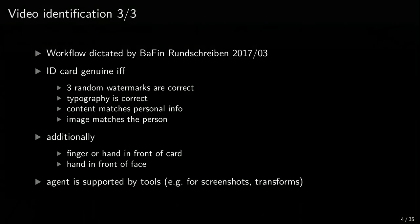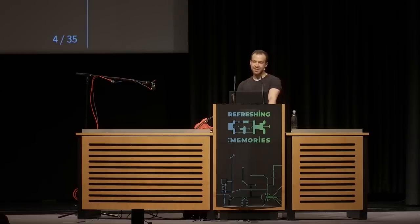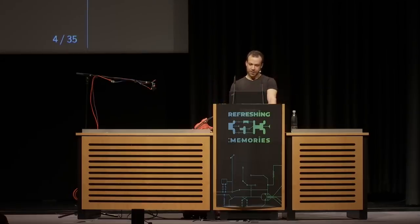Back to the workflow of video identification. The German institution for financial oversight issued a letter with the exact workflow — what they have to ask and how. They consider the identification successful if three watermarks are correctly identified on webcam screenshots, if the text is correct and matches the personal information given on the form, and if the image on the card matches the person in the webcam feed. Additionally, I have to move a finger in front of the card and move my hands in front of my face. The agent is supported by tools — when he sees the watermark he presses a button to take screenshots, which is why you have to hold the card for a few seconds in exactly the right position.